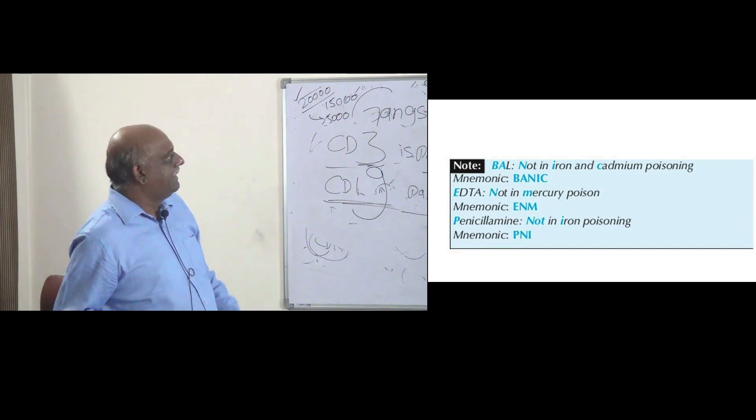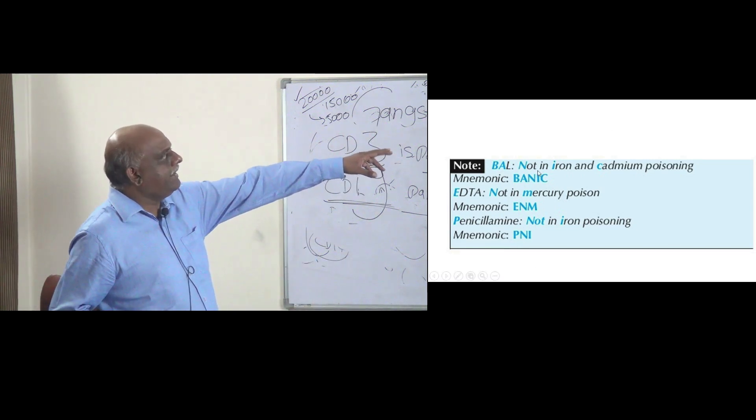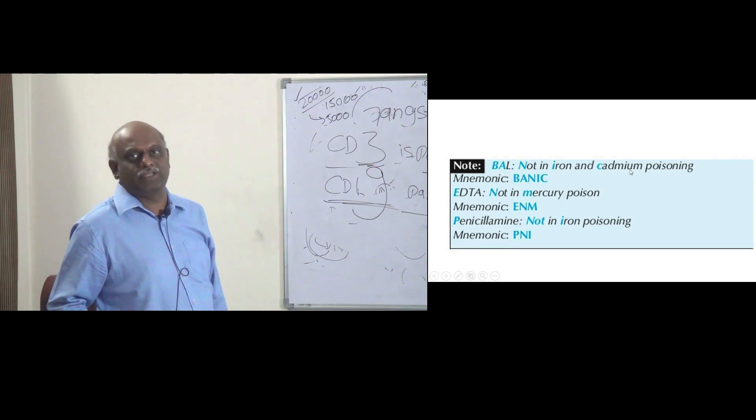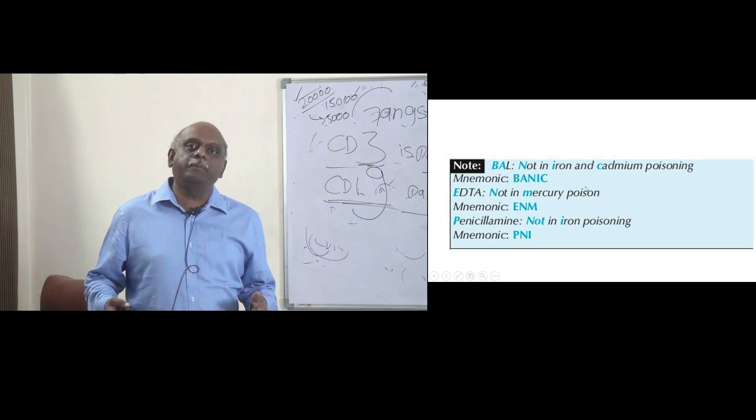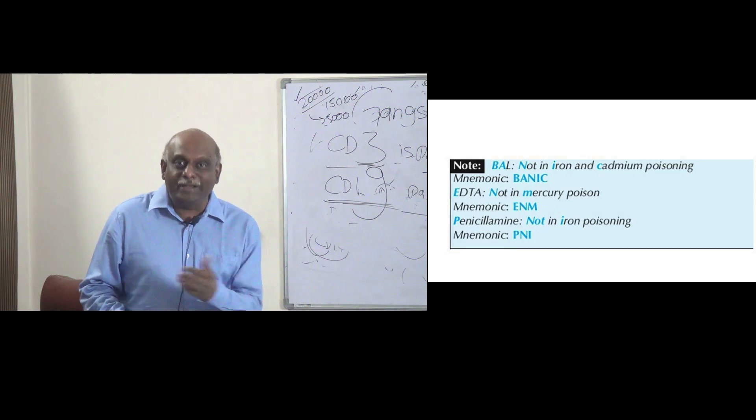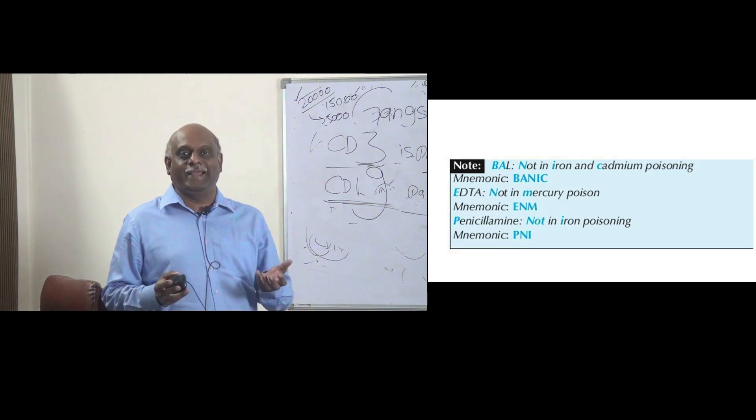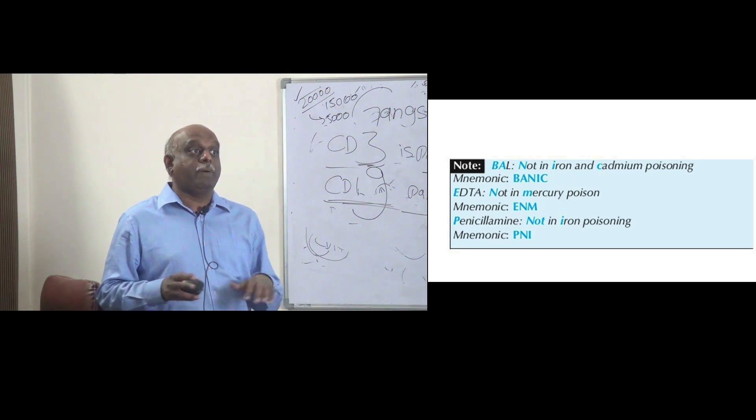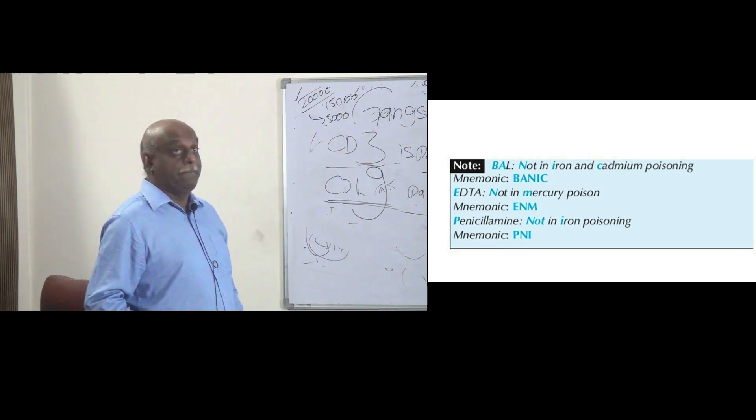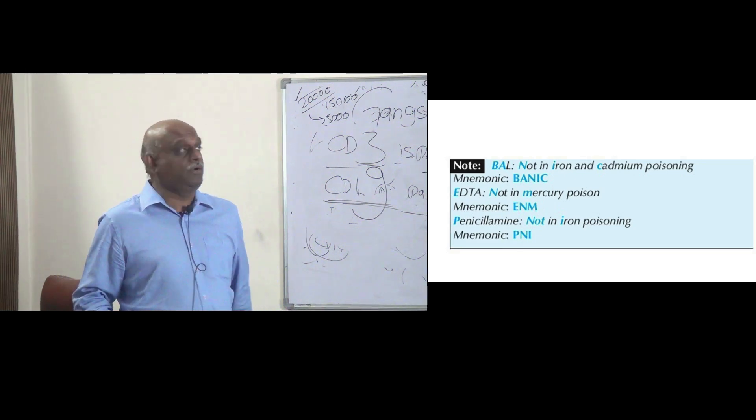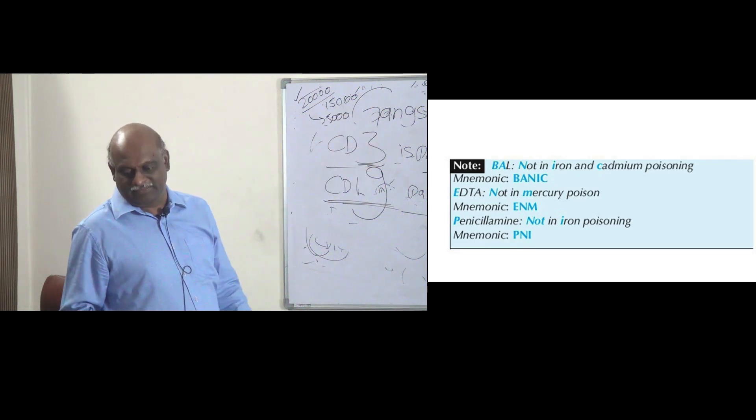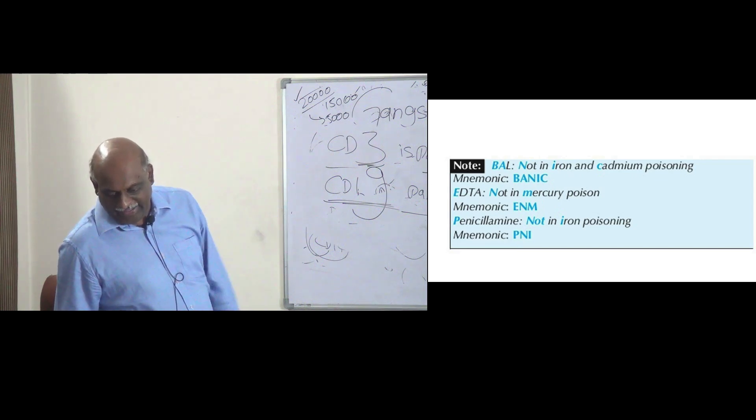So what is bannick? B-A hota hai, BAL. N is not used in, I is iron, and C is cadmium poisoning. This is called NEET-PG language. NEET-PG itself, like Latin, Greek, Mandarin. NEET-PG ka bhi ek bhaasha hota hai. Woh bhaasha mein aapko pandit ho na hai to become the topper. So hamarap pandit kya hota hai? Bannick. Bannick mat mano. BAL hai. BAL mein, you don't use it in iron and cadmium is what you need to basically remember.